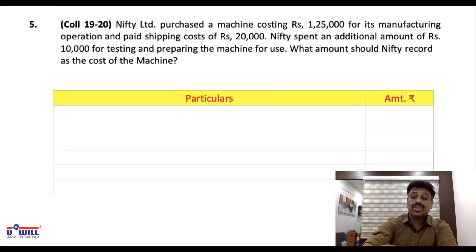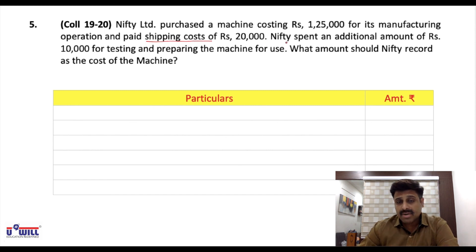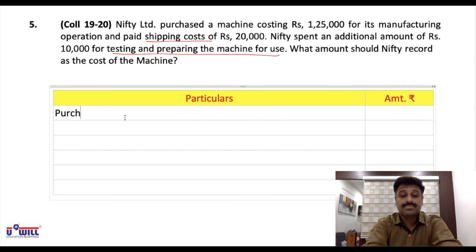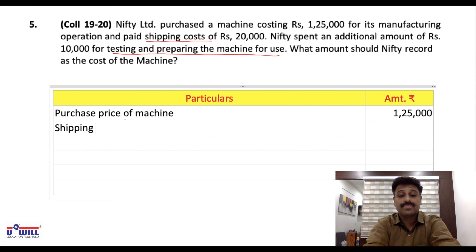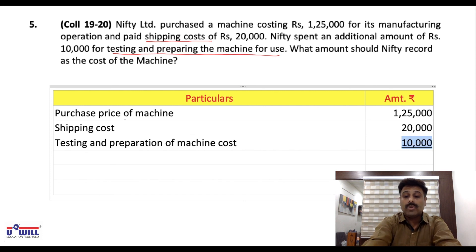Last question for today — Question Number 5. Nifty Limited purchased a machine costing 1,25,000 for its manufacturing operation and paid shipping cost of 20,000. Nifty also spent an additional 10,000 for testing and preparing the machine — that is also to be included, minus the scrap value of any unsuccessful test product. Total cost: purchase price 1,25,000 plus shipping 20,000 plus testing 10,000 equals 1,55,000.